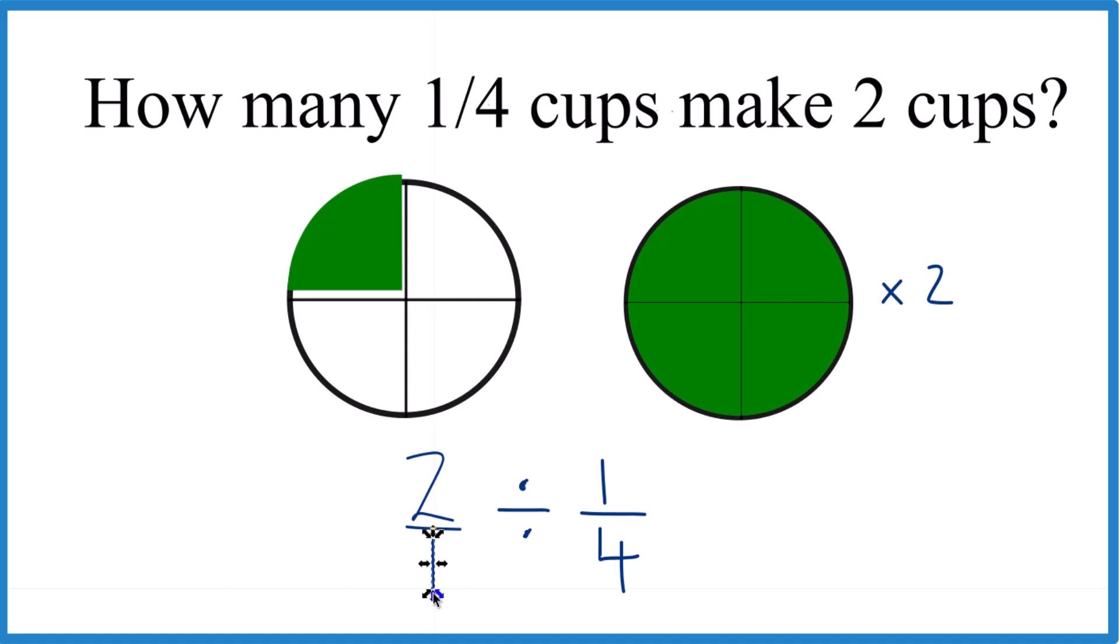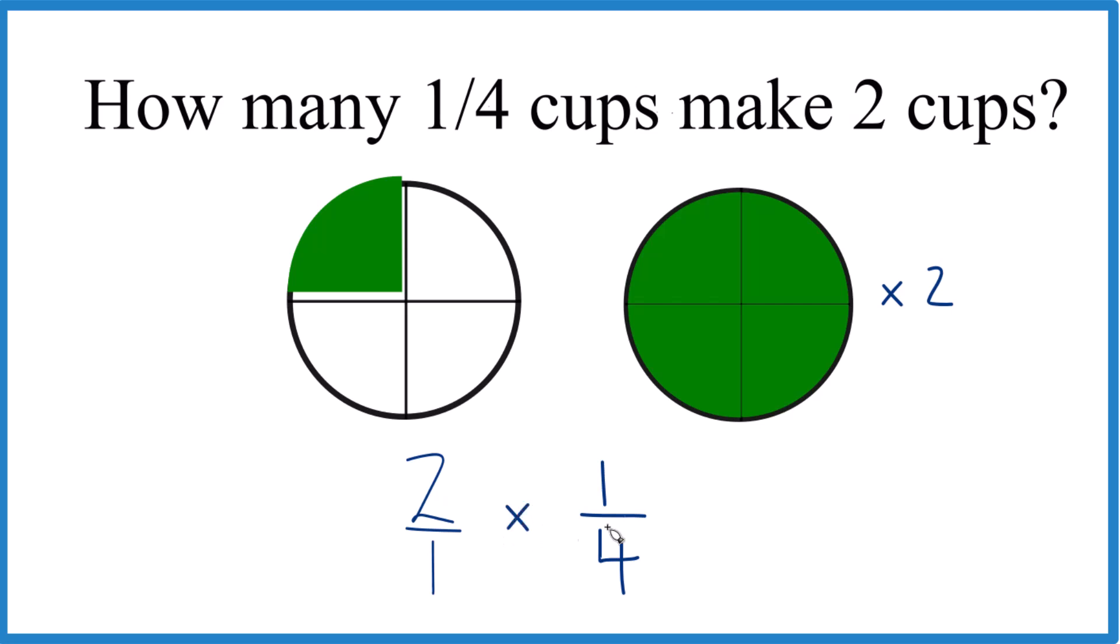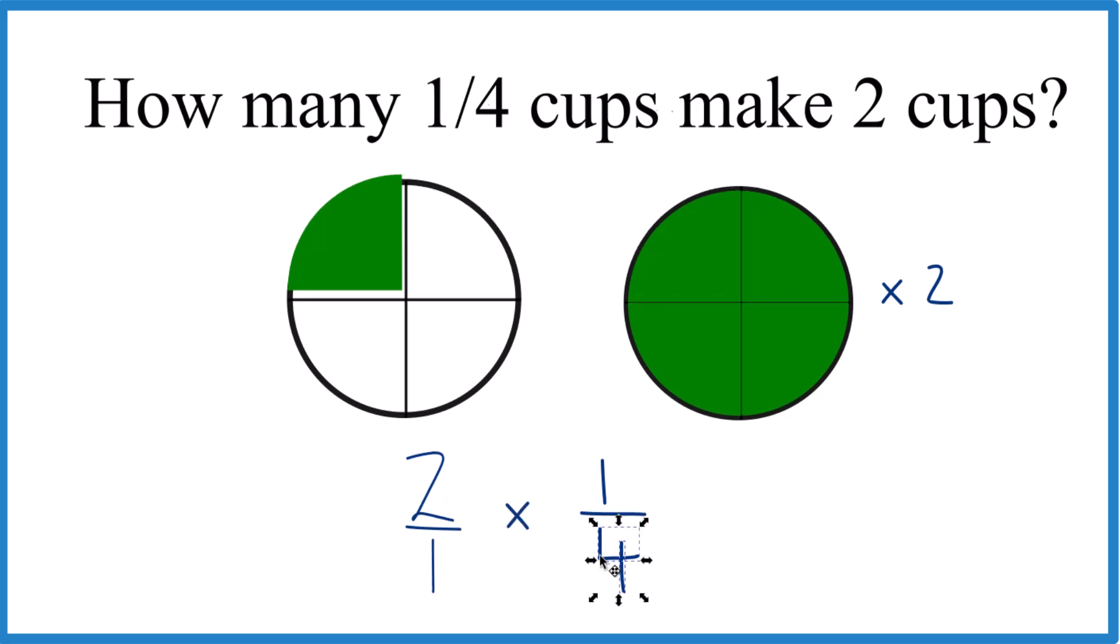And then instead of division, what we'll do is multiply. We're going to multiply by the reciprocal of one-fourth. So we move the four up to the top here. One comes down to the bottom.